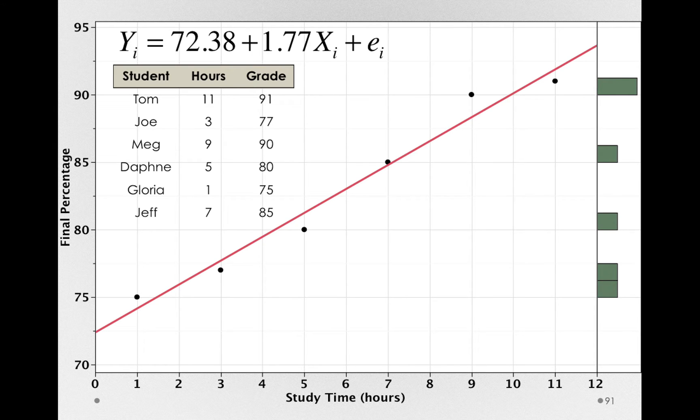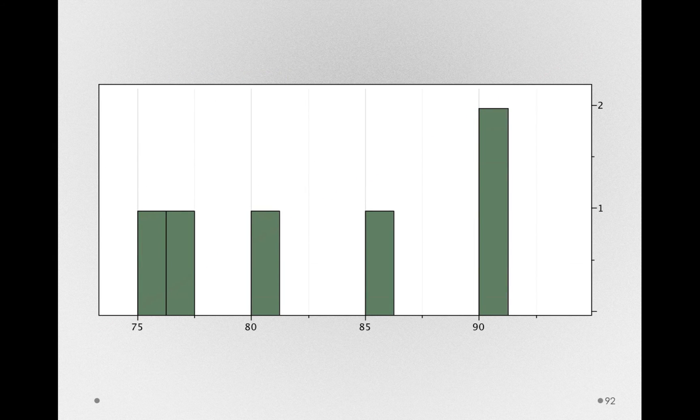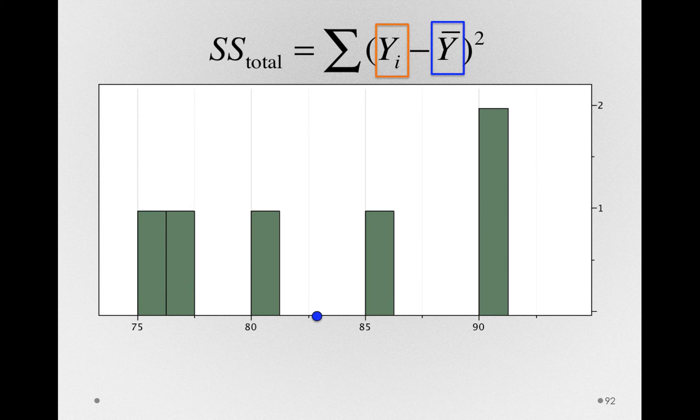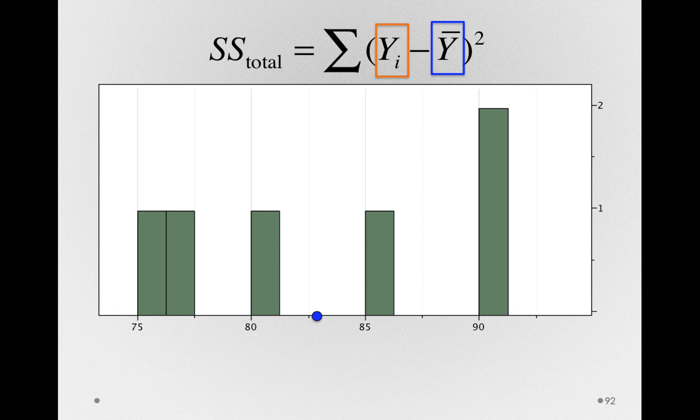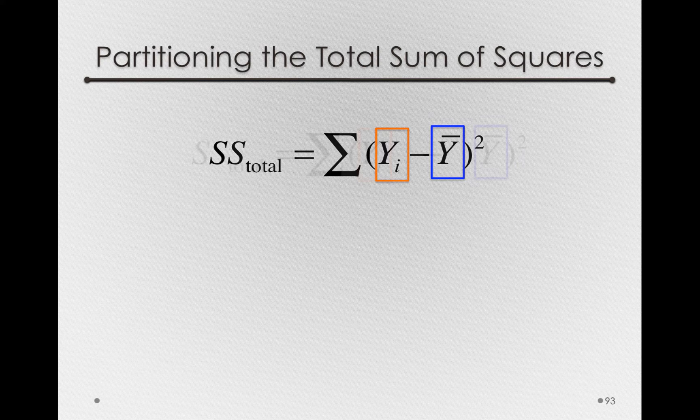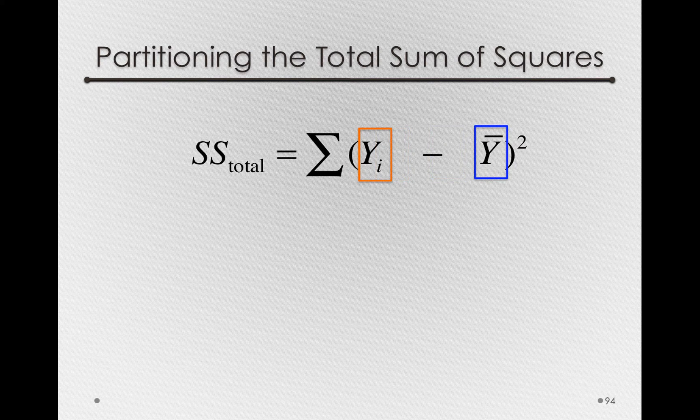So in the same way we formed an analysis of variance before, we're going to be seeking to explain some sums of squares, specifically sums of squares total. That is, the total amount of deviations in the y-axis. So the yi's minus the y-bar squared. So, just like before, we'll have a sums of squares total. And what we're going to do is break apart those sums of squares total into two pieces.